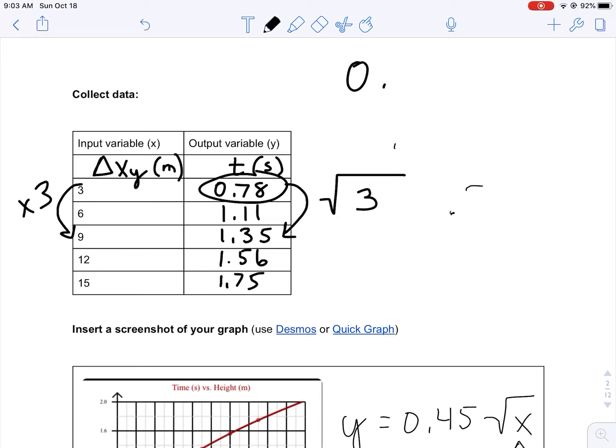We can verify that. 0.78 times the square root of three. Grab the calculators. Three square root gives you 1.732, multiply that by 0.78, and you get 1.35, which is what you get for nine. So again, it's a square root function, so the output increases by the square root of the factor of the input.